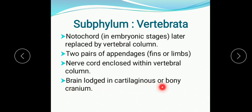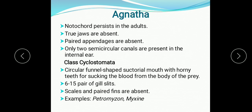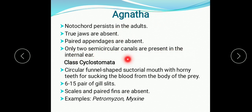The brain is lodged in a cartilaginous or bony cranium — the cranium is the hard, bony covering of the brain. Sub-phylum Vertebrata is divided into two groups: Agnatha and Gnathostomata. In Agnatha the notochord persists in adults, true jaws are absent, paired appendages are absent, and only two semicircular canals are present in the internal ears.